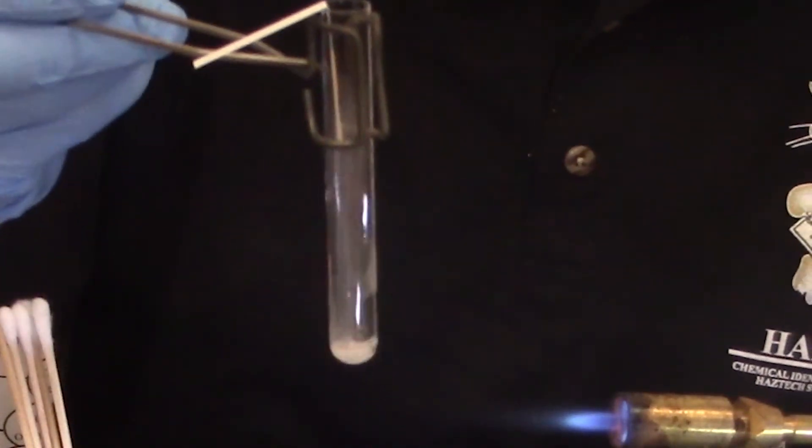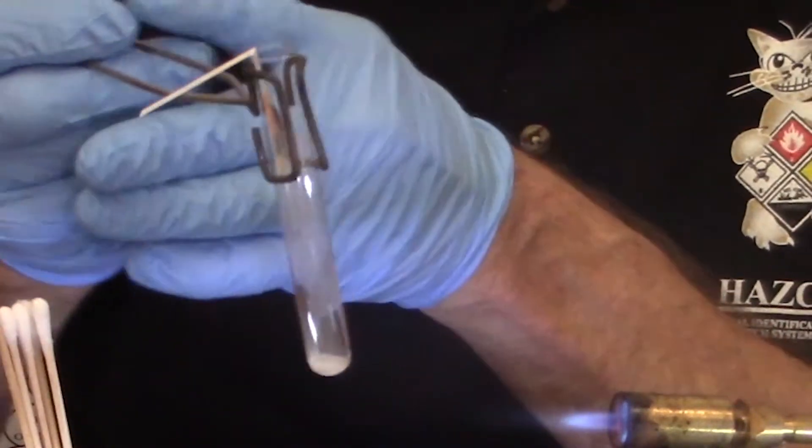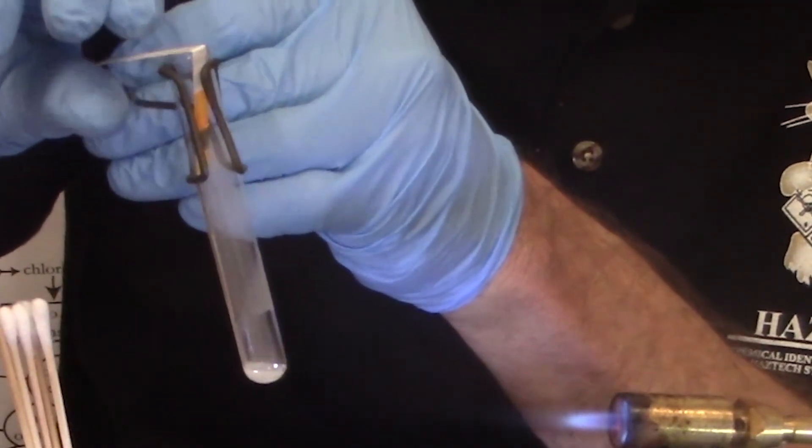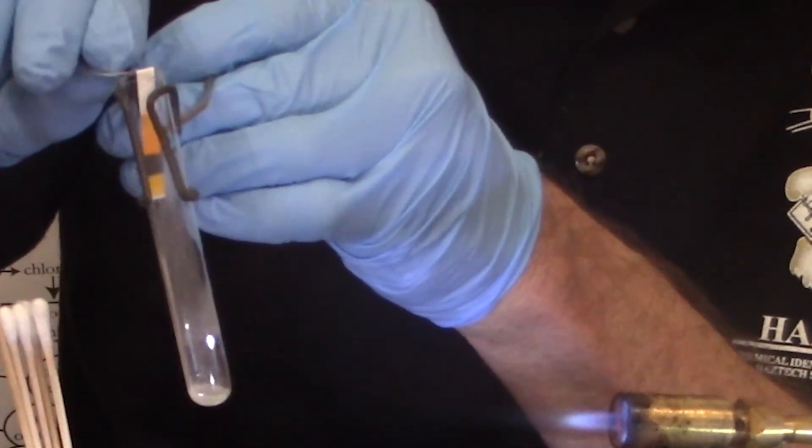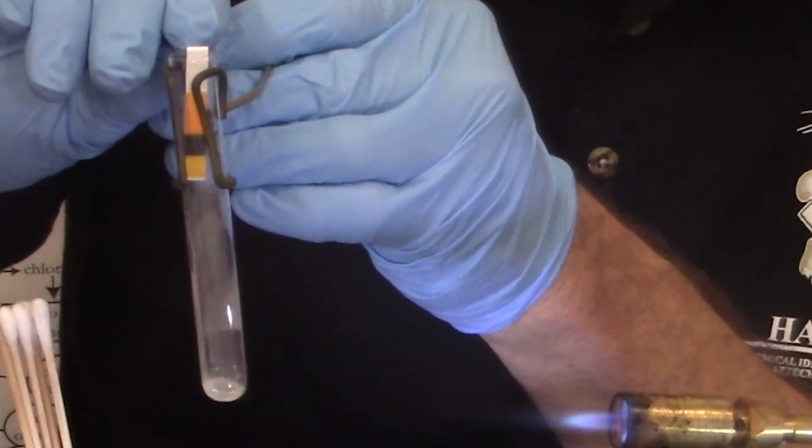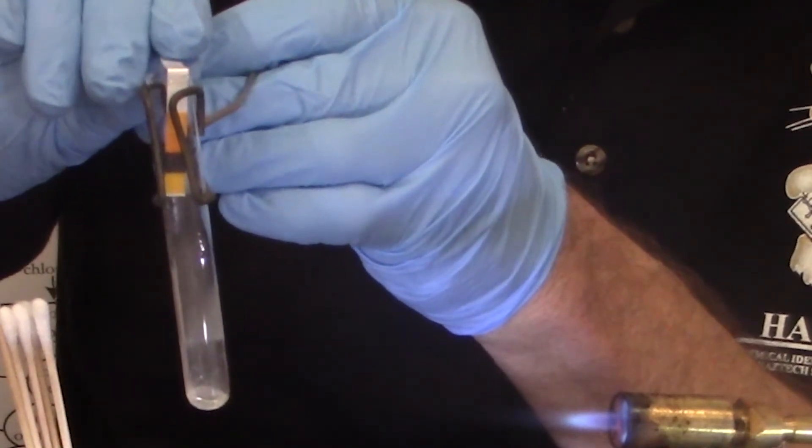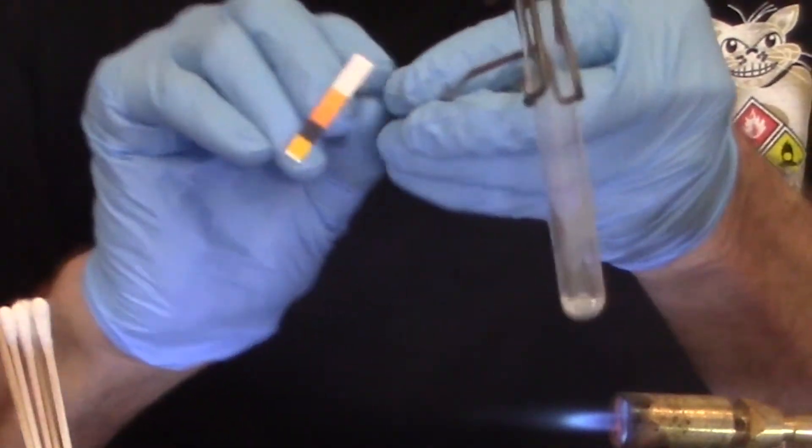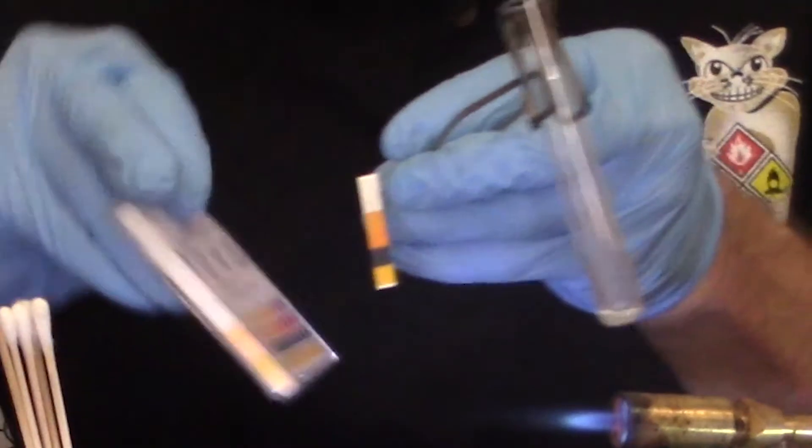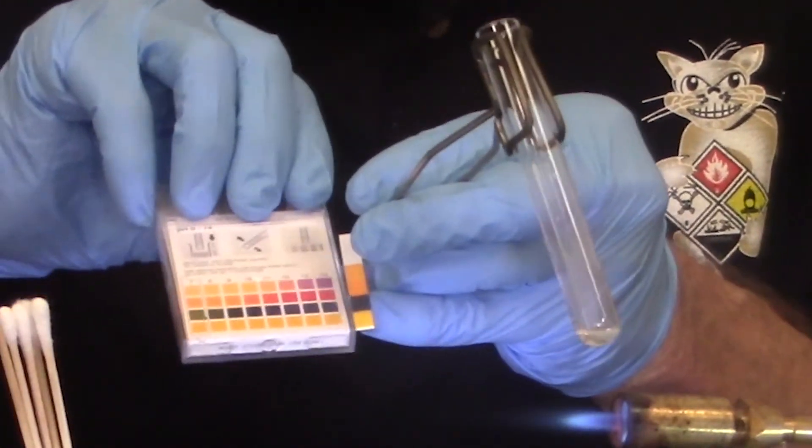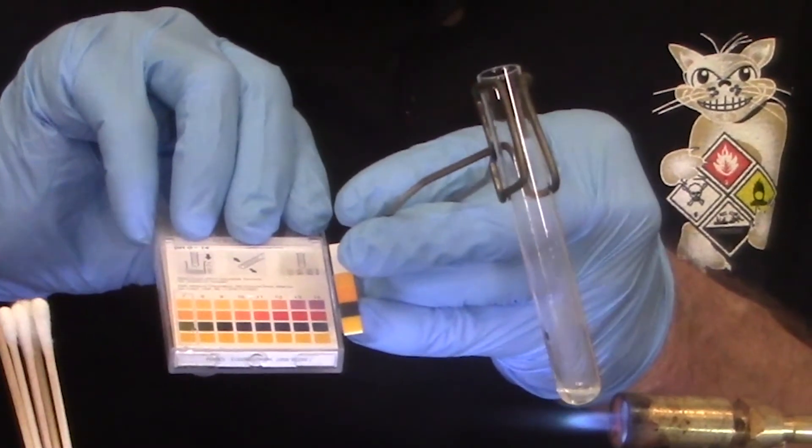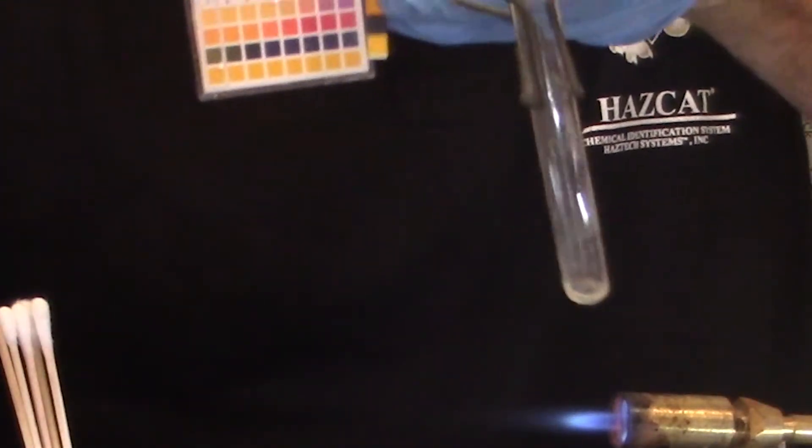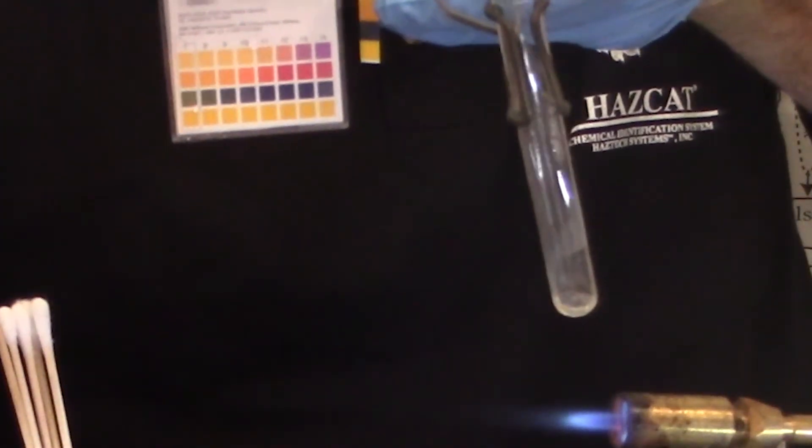Just pull the pH paper out of the heat and let it sit in the vapors for that 10 seconds. I don't know if you can see it, but the pH paper did change. That second square got quite dark and I got a pH of about a 9 or 10, about a 9 or 10 on there.